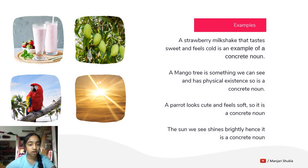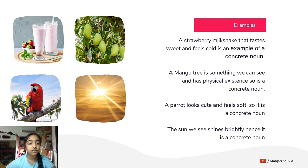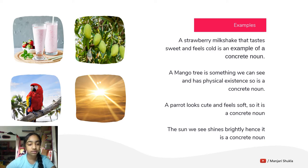A few more examples are: a strawberry milkshake that tastes sweet and feels cold is an example of a concrete noun because we can taste and feel it. A mango tree is something that we can see and has a physical existence, so it is a concrete noun. A parrot looks cute and feels soft, so it is a concrete noun as we can see and feel it. The sun we see shines brightly, hence it is a concrete noun because we can see it.